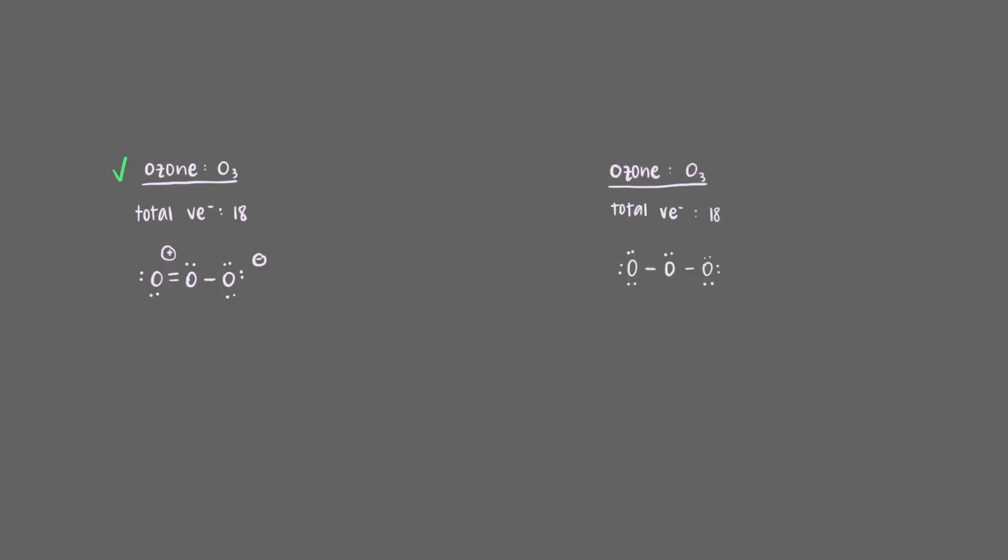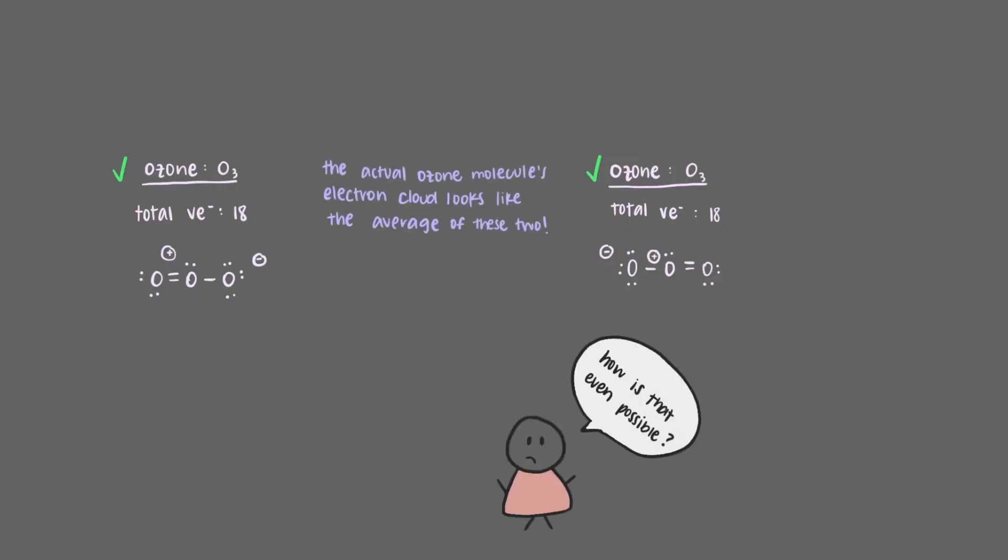But what would have happened if we had moved the lone pair on the right-hand side of the molecule instead? We get this molecule. This is also a correct Lewis structure for ozone. So which one is it? The answer is that it's both and neither. The actual ozone molecule's electron cloud doesn't look like either of these molecules, but it kind of looks like the average of the two.